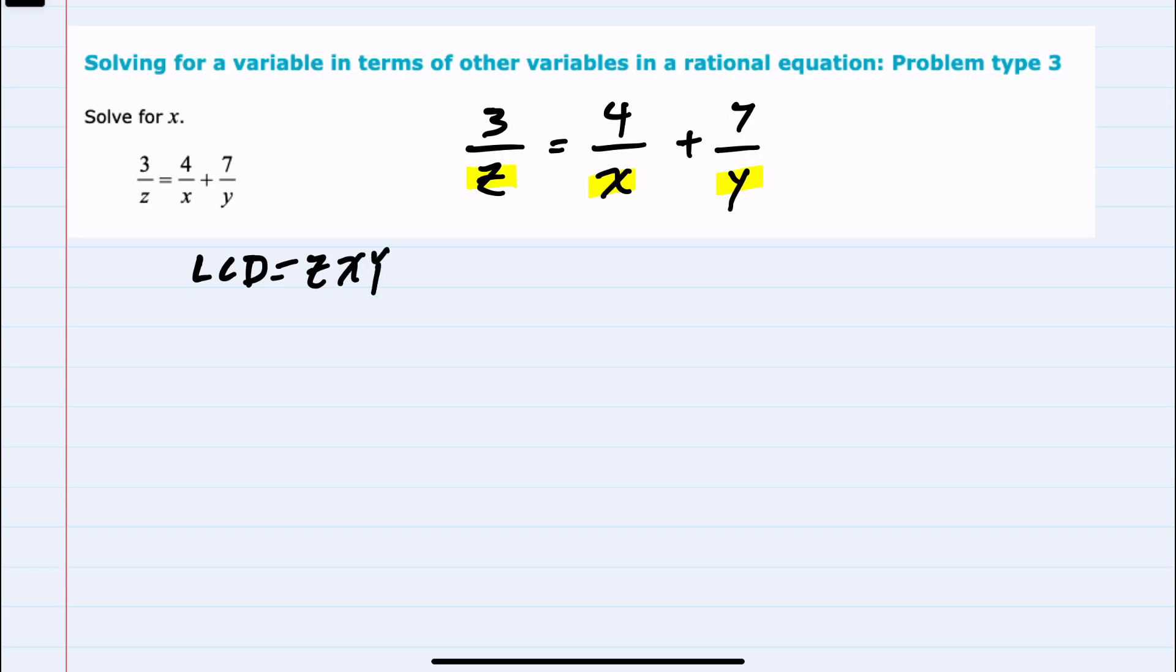We will be multiplying each term on the left by zxy, and also each term on the right by z, x, and y.